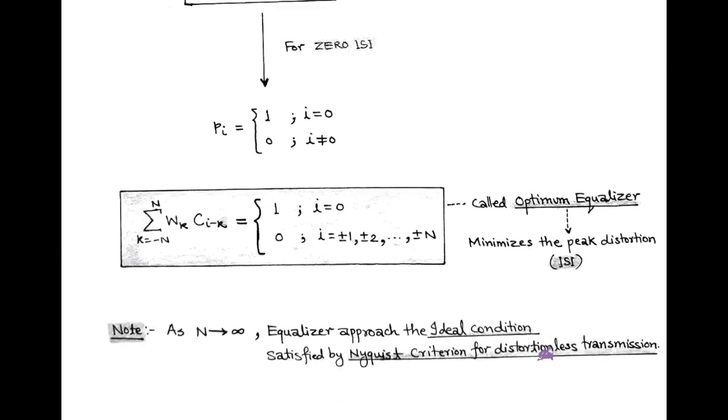So in equalization process, we can adjust the weight value which results in zero inter-symbol interference. Now we note a point: in the equalization process, as the value of n tends to infinity, then our equalizer filter approaches an ideal condition and satisfies the ideal solution of Nyquist criteria for distortionless transmission.